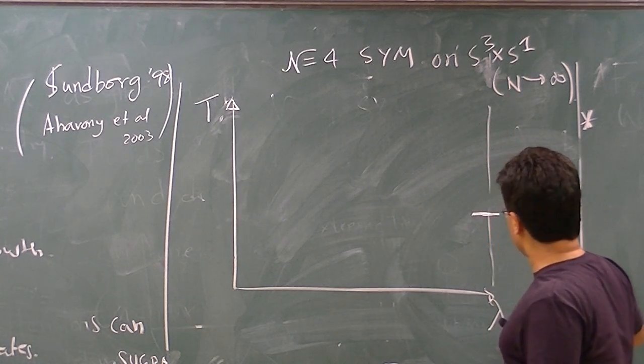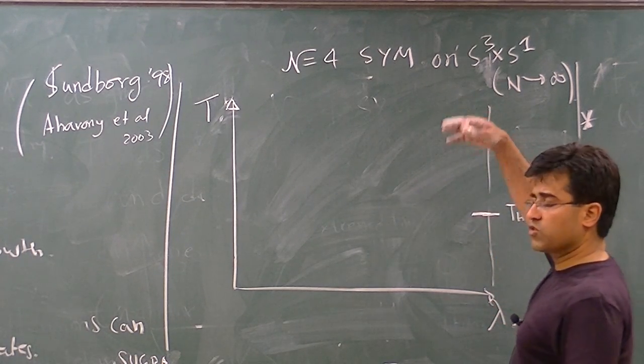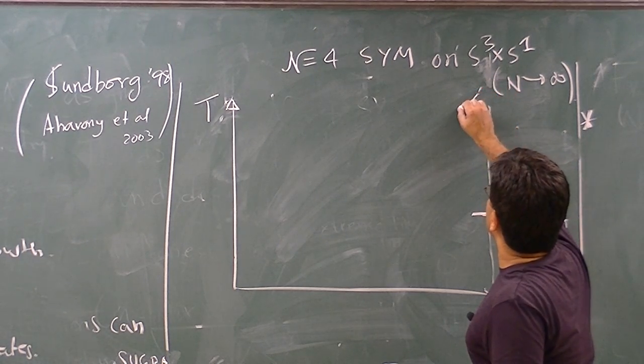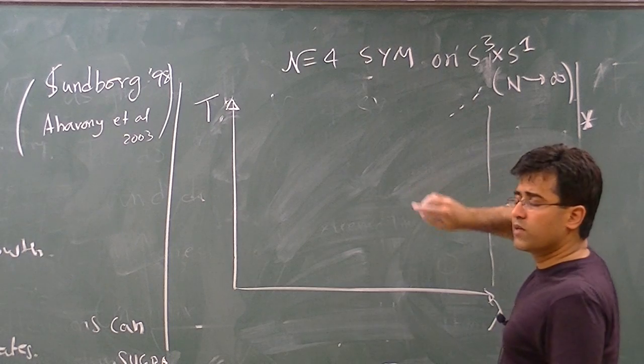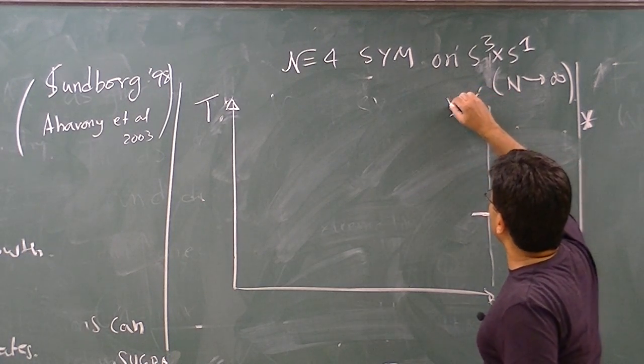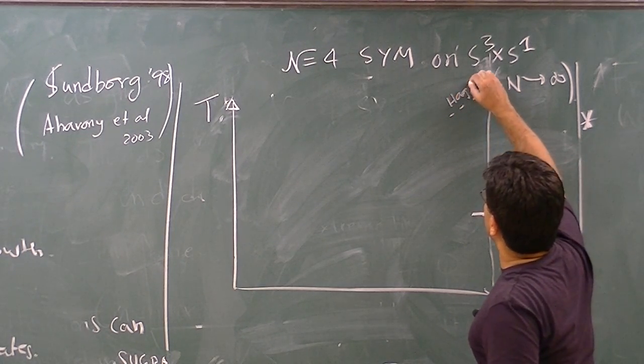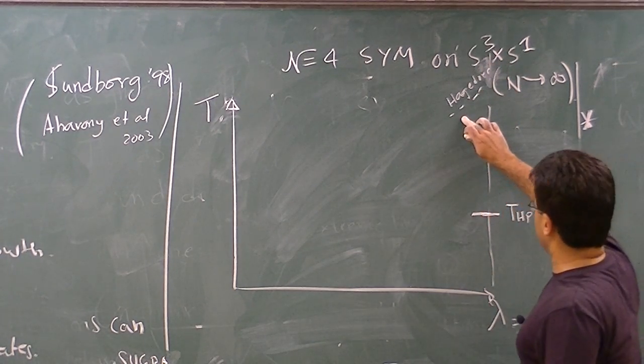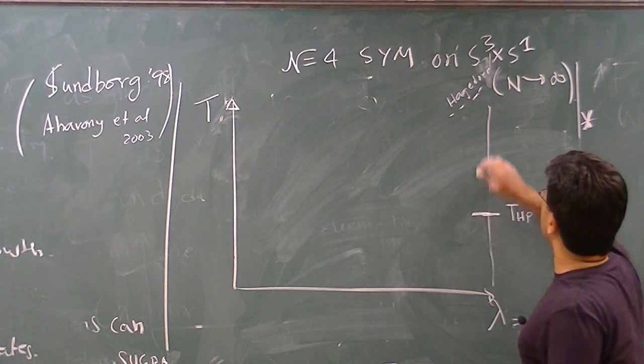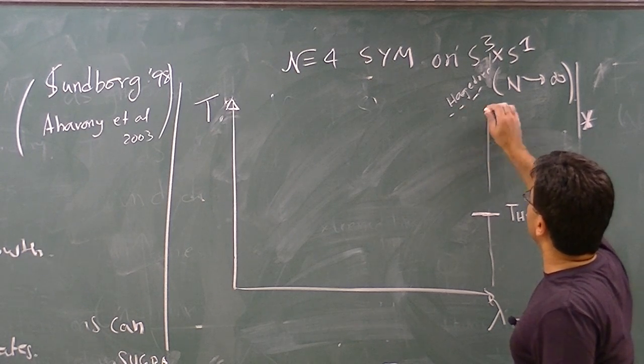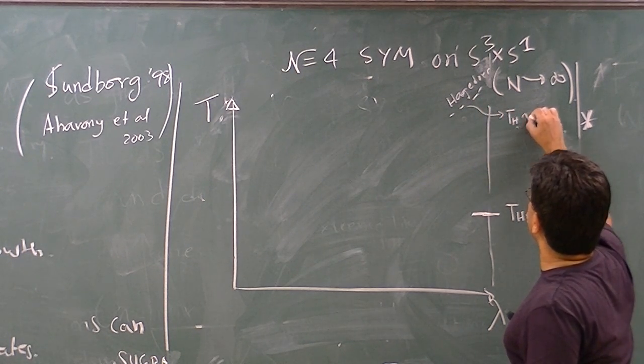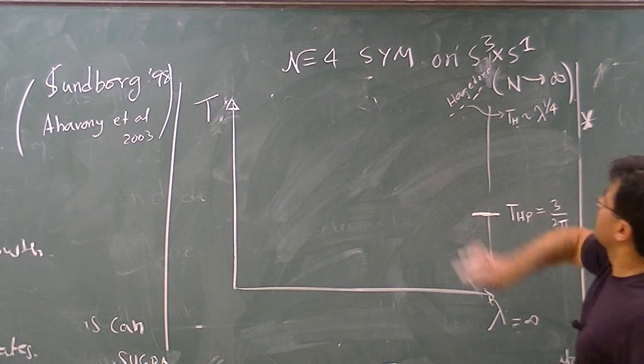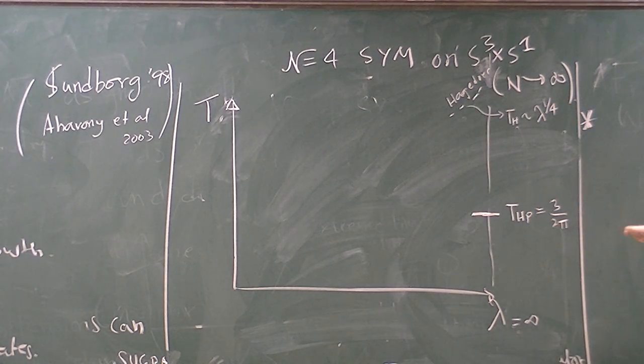Also, at infinite 't Hooft coupling, where the theory is described by string theory in AdS5 cross S5, there is this interesting feature which is what we talked about earlier, which is the Hagedorn temperature. And this Hagedorn temperature, its behavior with lambda is that this temperature actually goes like T Hagedorn goes like lambda to the one-fourth. So this curve sort of approximates that. It's an increasing function of lambda.